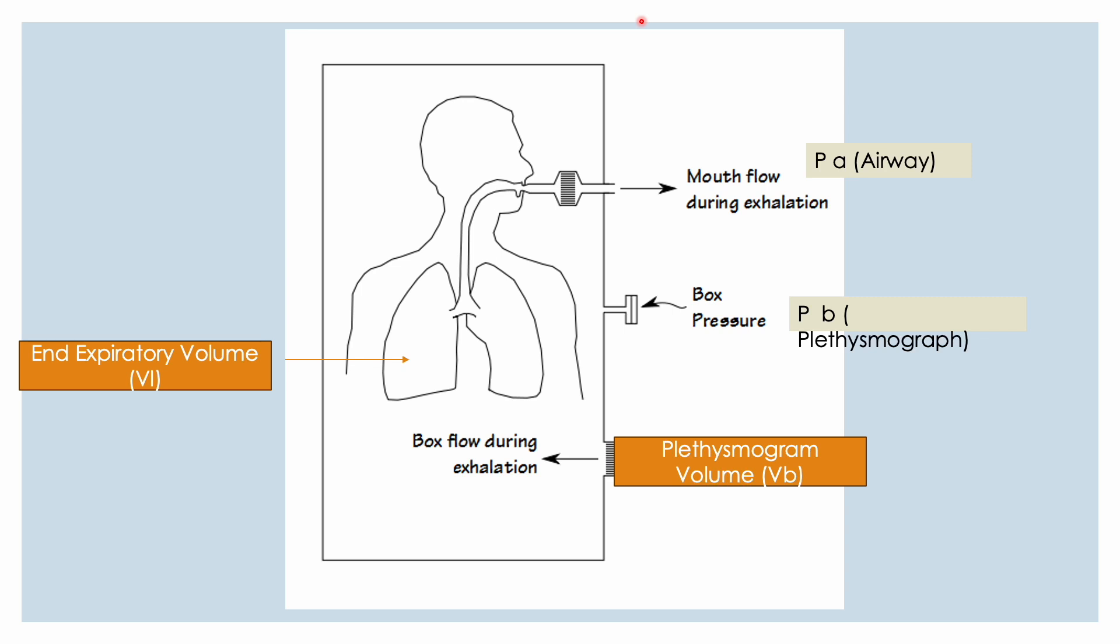He tries to inhale basically at end expiration here because the panting maneuver is starting then. But because it's a closed glottis, the shutter is closed, there's actually no inhalation. So what's happening is that when he tries to pant there is some lung expansion and some change in lung volume because of change in the pressure in the lung and that's what we are actually measuring.